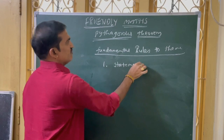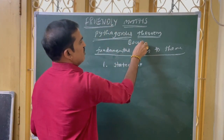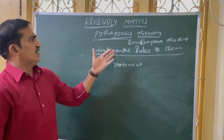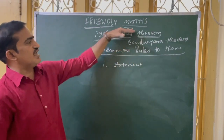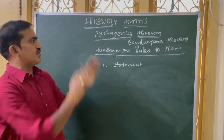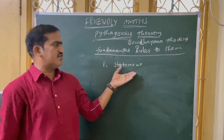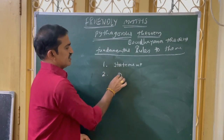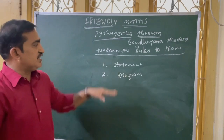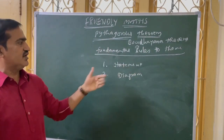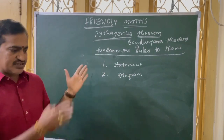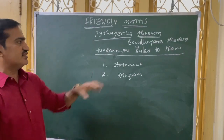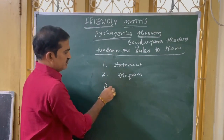What are the fundamental rules to write a theorem? These fundamental rules should be remembered. First, what we have to write is the statement. Some theorems are named like Pythagoras theorem — another name for this is Baudhayana theorem. They will sometimes not mention the statement and only give the name, or they will give the statement without the name. Either way, we have to identify it and write the statement first. Next is the diagram. The diagram should not be drawn as you wish — depending upon the statement, what is given should be represented in the diagram.